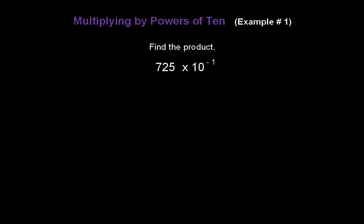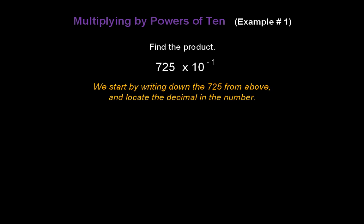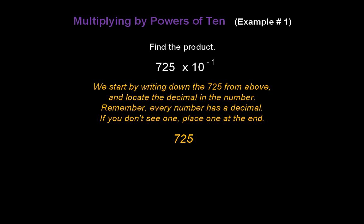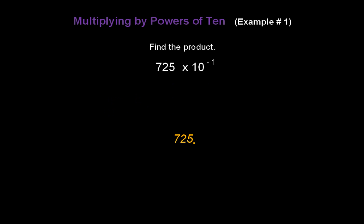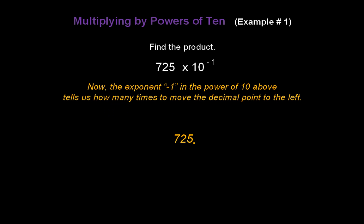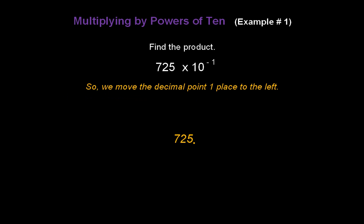Find this product: 725 times 10 to the negative 1. Start by writing down 725. Locate the decimal — we don't see one, but every number has a decimal, so place one at the end. The exponent negative 1 tells us how many times to move the decimal point to the left. Move the decimal one place to the left, and the answer is 72.5.